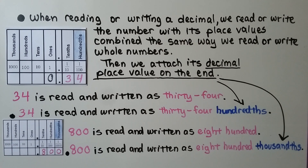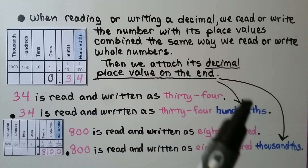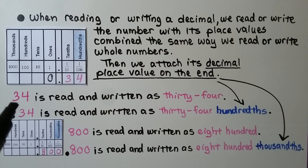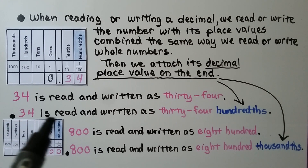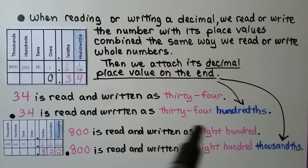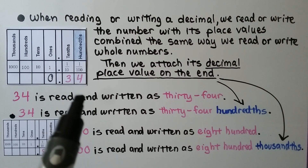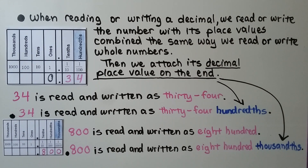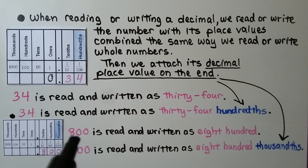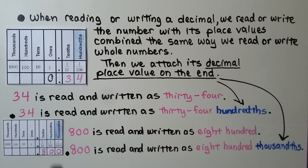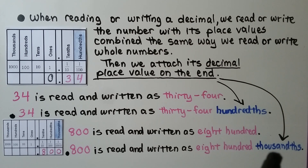When reading or writing a decimal, we read or write the number with its place values combined — the same way we read whole numbers — then attach its decimal place value name at the end. So thirty-four is read as thirty-four, but .34 is read as thirty-four hundredths. Similarly, .800 is read as eight hundred thousandths, because the last digit is in the thousandths place, so we say eight hundred but add thousandths at the end.